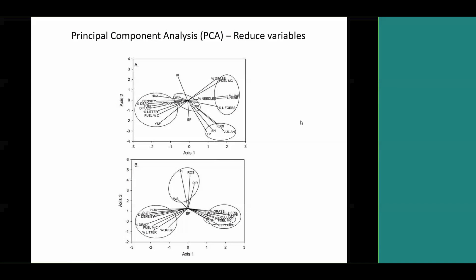Since we measured so many different variables, in order to look at their interactions in a structural equation model, we used principal components analysis to reduce them down. We grouped correlated variables and picked one representative variable from each group. For example, variables over here represent fuel load — which corresponds closely to heat per unit area, woody fuel amount, percent litter, and dead fuel. Another group is related to time of year: Keetch-Byram Drought Index, Julian date, temperature, and specific humidity.